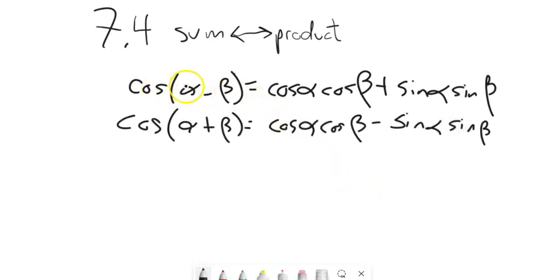Here's one that we know. Cosine of alpha combined with beta is equal to cosine of the first one, cosine of the second one, opposite operator. Minus becomes plus, plus becomes minus, and then sine alpha, sine beta. We have this relationship.